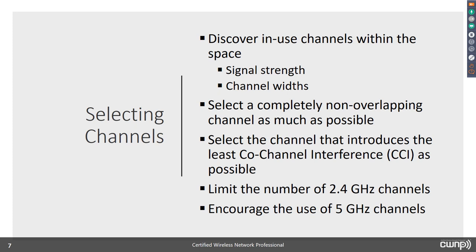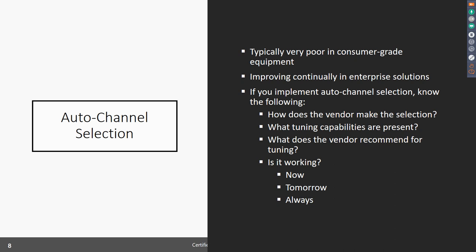Your options in order: first, a completely non-overlapping channel; second, the channel with the least co-channel interference. Additionally, limit the number of visible 2.4 GHz channels and encourage use of 5 GHz channels. To reduce CCI you don't necessarily need fewer APs — you can turn down output power to reduce signal range. Most enterprise gear today also offers auto channel selection, though this feature is typically very poor in consumer-grade equipment. If you're watching this webinar, you have the knowledge to go in and manually pick the best channel on consumer devices.